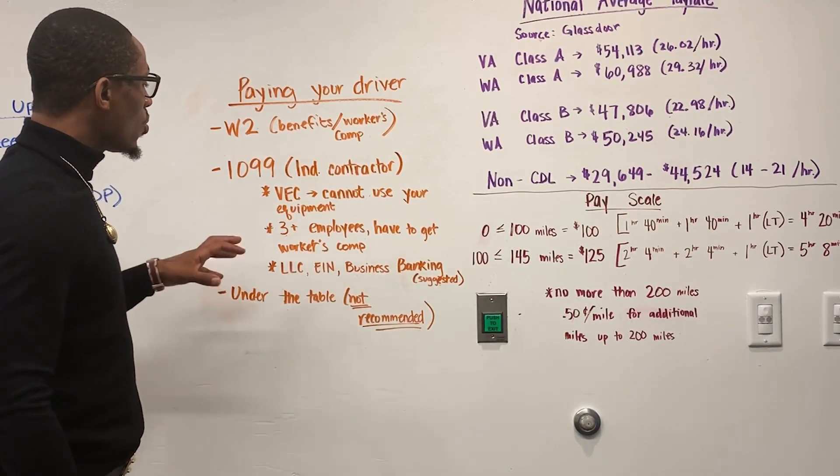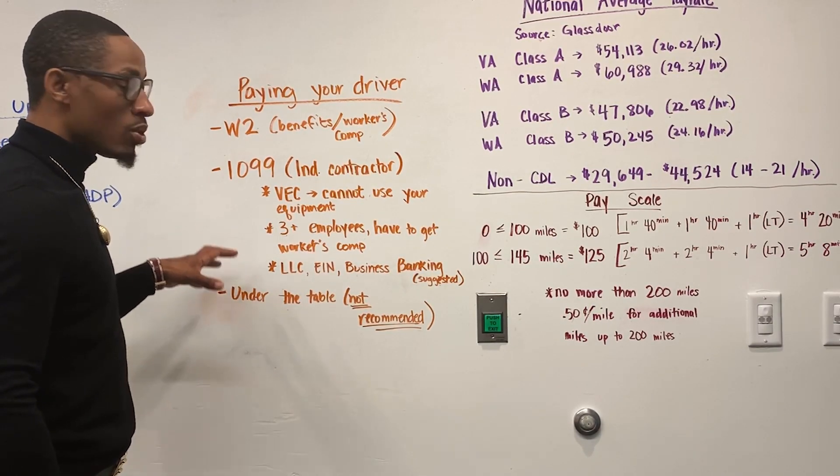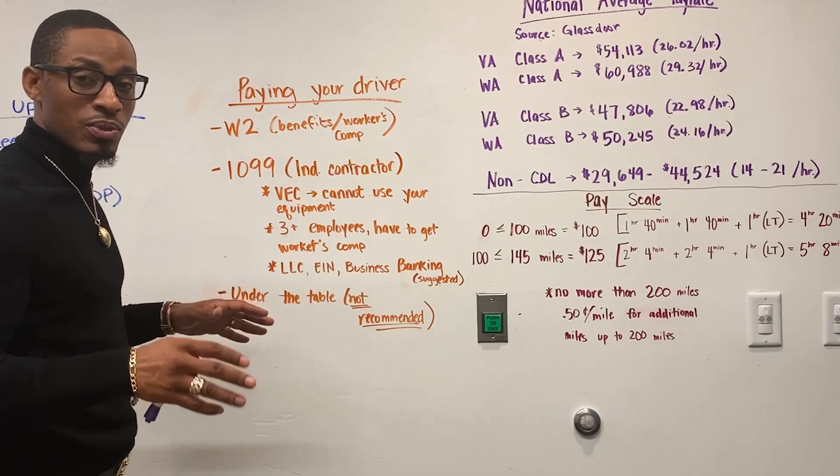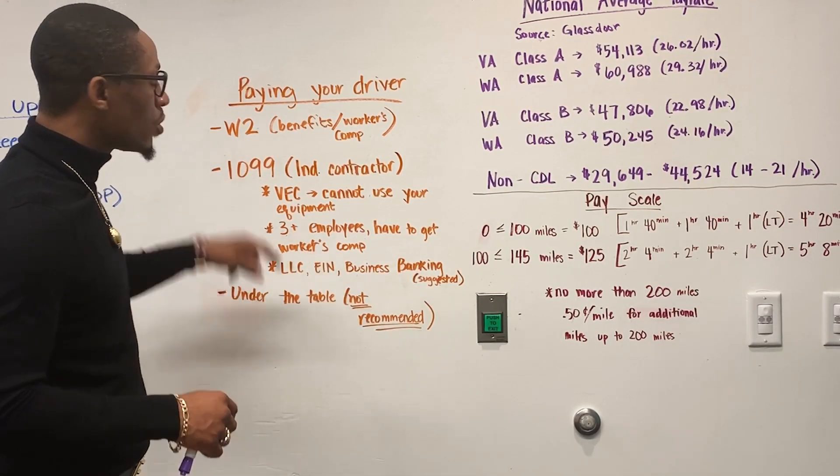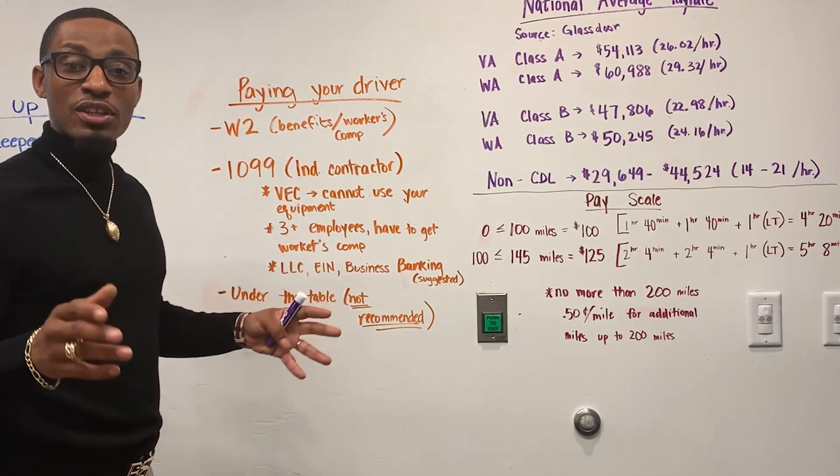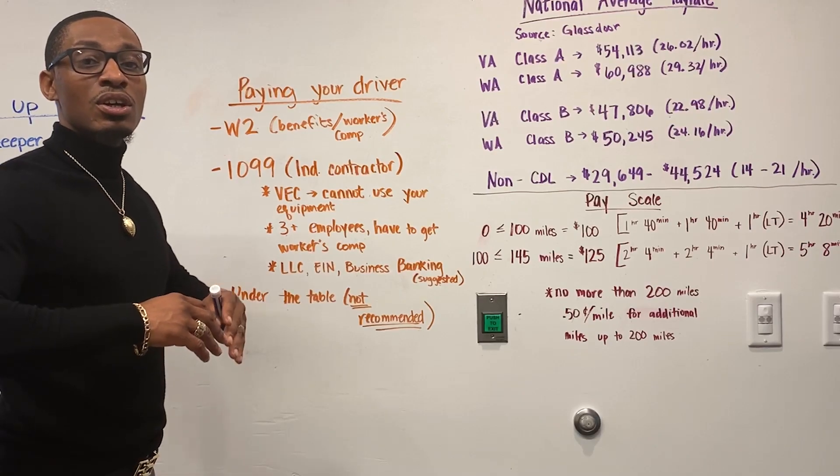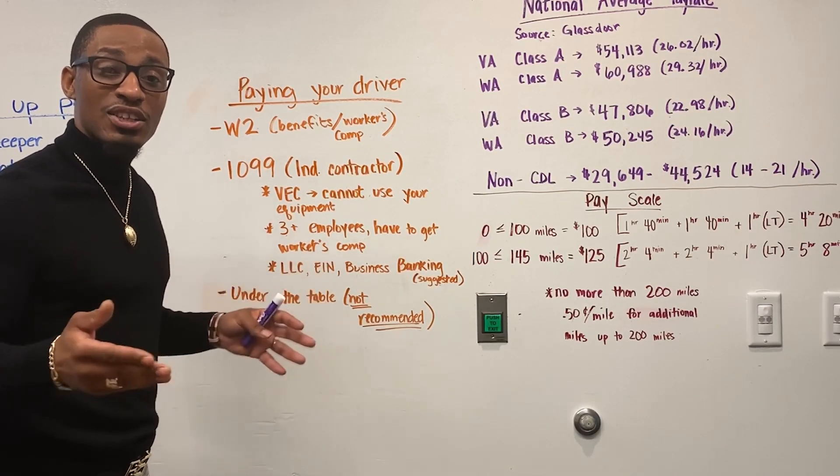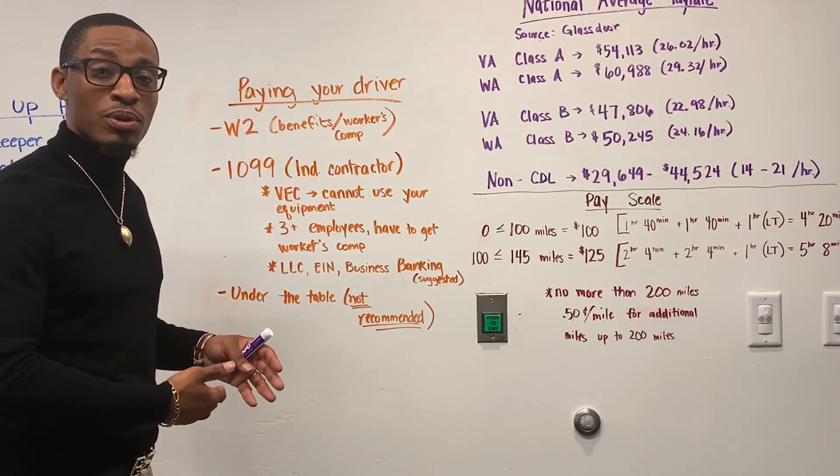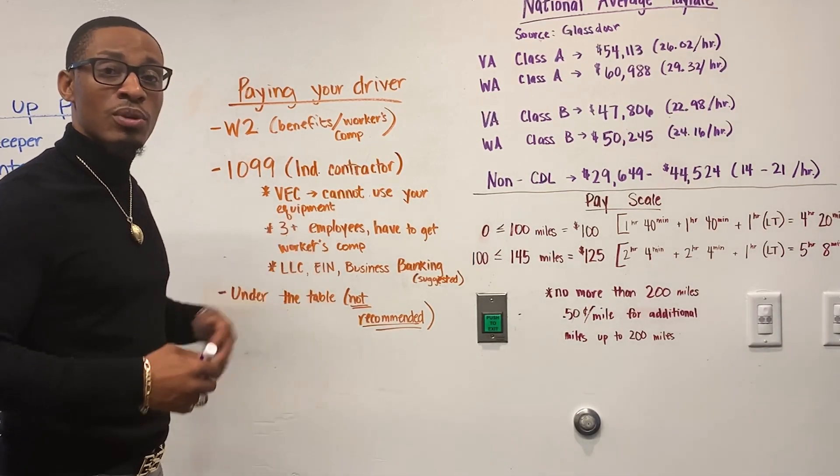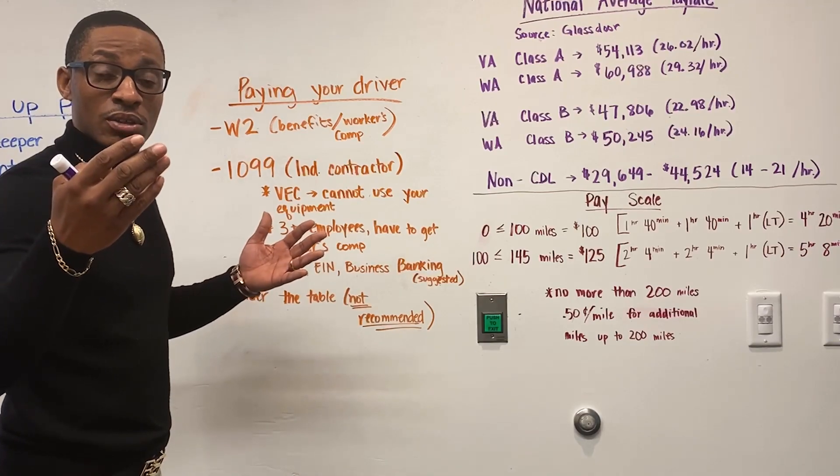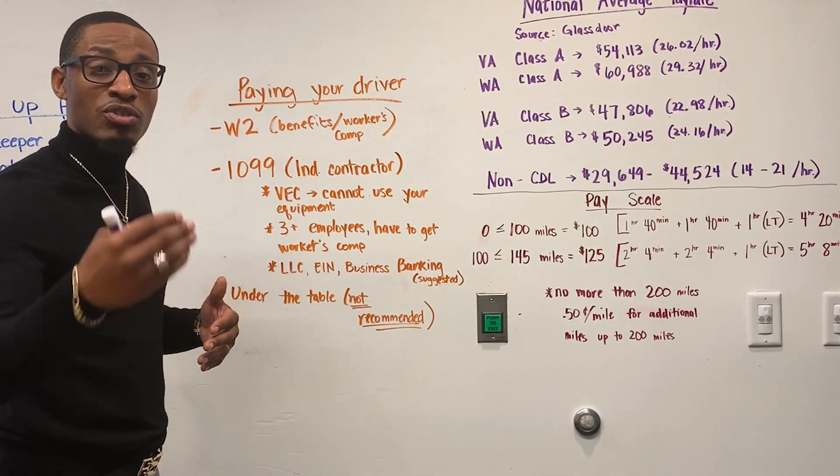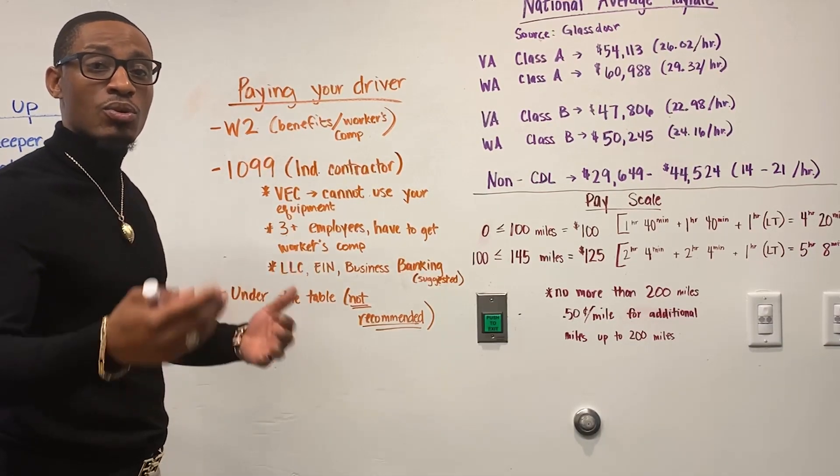Now, I'm in Virginia and according to the Virginia Employment Commission, which I'm pretty sure is nationwide, but I know according to the Virginia Employment Commission, the tricky thing about 1099 independent contractors is the only way they're an independent contractor if they come with their own equipment. So, the issue we run into with our drivers is that our drivers are driving our equipment.